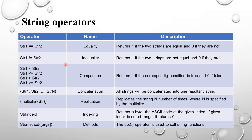The inequality operator: string1 not equals string2 — if both strings are not equal it returns 1, otherwise it returns 0. Then string1 less than string2, less than or equal to, greater than, greater than or equal to — these are comparison operators. The same lexicographical manner is used: if the condition is true, it returns 1.